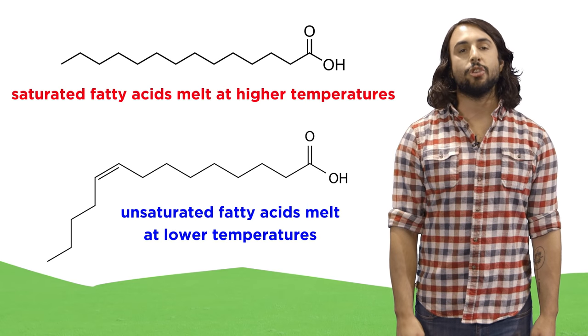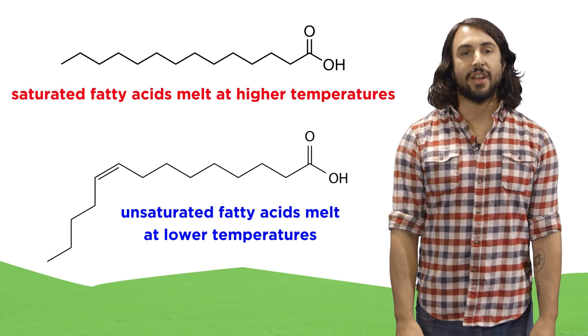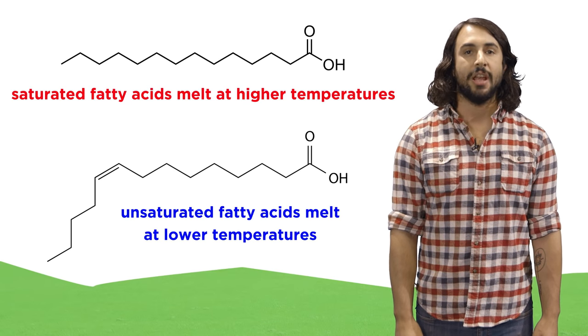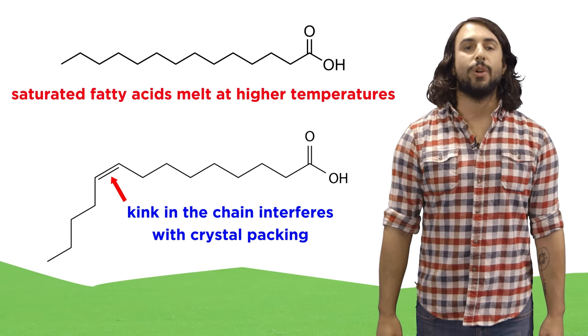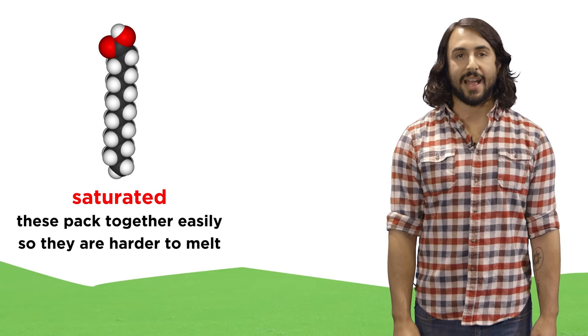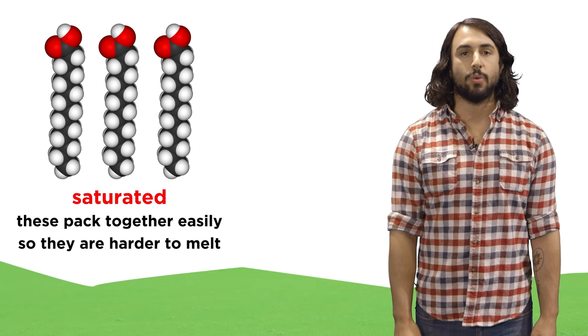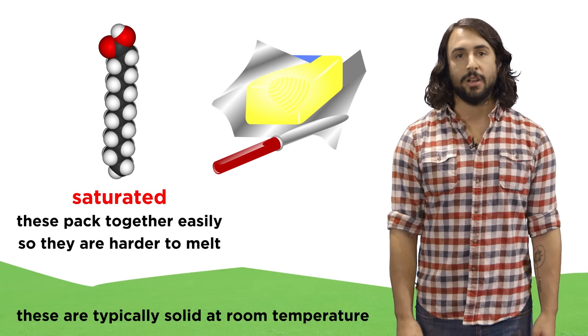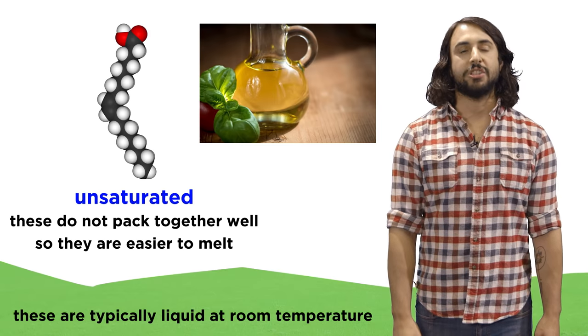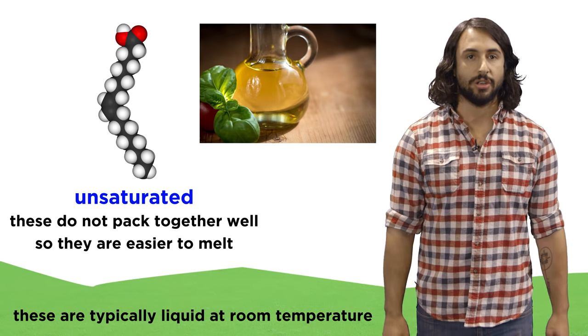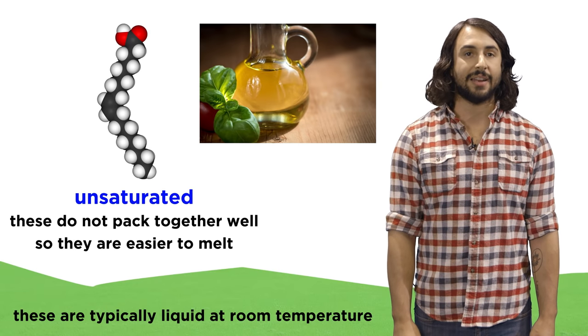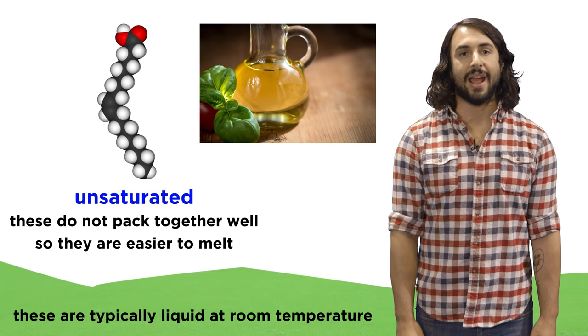In general saturated fatty acids have higher melting points than unsaturated ones because the double bonds restrict rotation and therefore cause a kink in the chain which interferes with crystal packing. Saturated fatty acids can pack neatly and maximize van der Waals attractions. That's why butter, which is fully saturated, is a solid at room temperature, whereas olive oil, which has a degree of unsaturation in one of its hydrocarbon chains, is less able to form an orderly solid lattice and is therefore a liquid at room temperature.